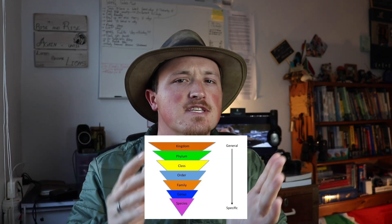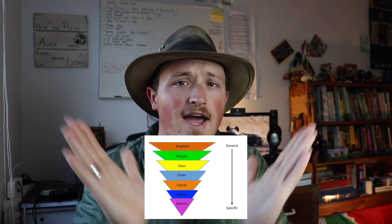Every mammal gets classified in seven steps, starting very broad and narrowing down more and more until you get to an individual species. Think of it like a funnel system or an upside-down triangle. Let's quickly look at these seven steps.